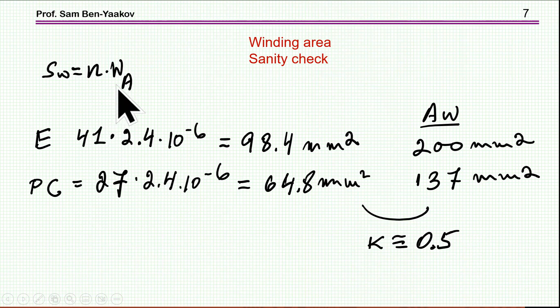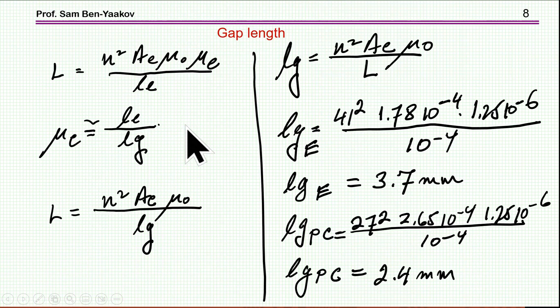So, we know what is the number of turns, we know what is the cross-section area of the wire, and now, let's go into the question of what is the gap that we need. Now, inductance is N^2 AE, which is the cross-section area, μ0 permeability in vacuum or air, and relative permeability. Relative permeability in a gap core is about the magnetic path length over the air gap length, approximately, this is for high mu, and all this is given in the videos that I've referenced.